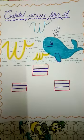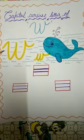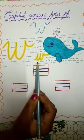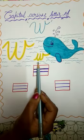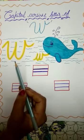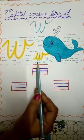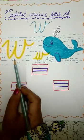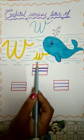See kids, this is our capital cursive letter of W. And this one is small cursive letter of W. Okay, it is a capital cursive, small cursive, capital cursive, small cursive.